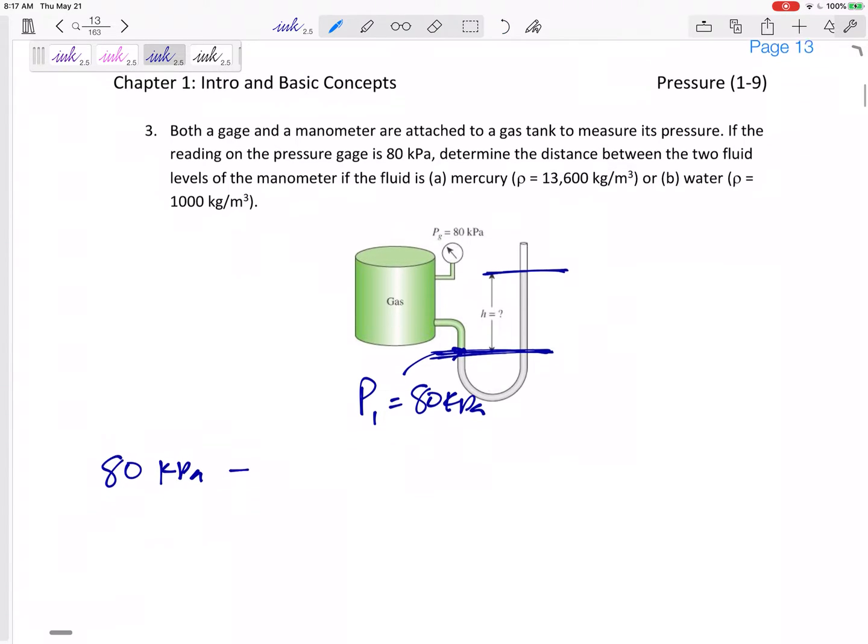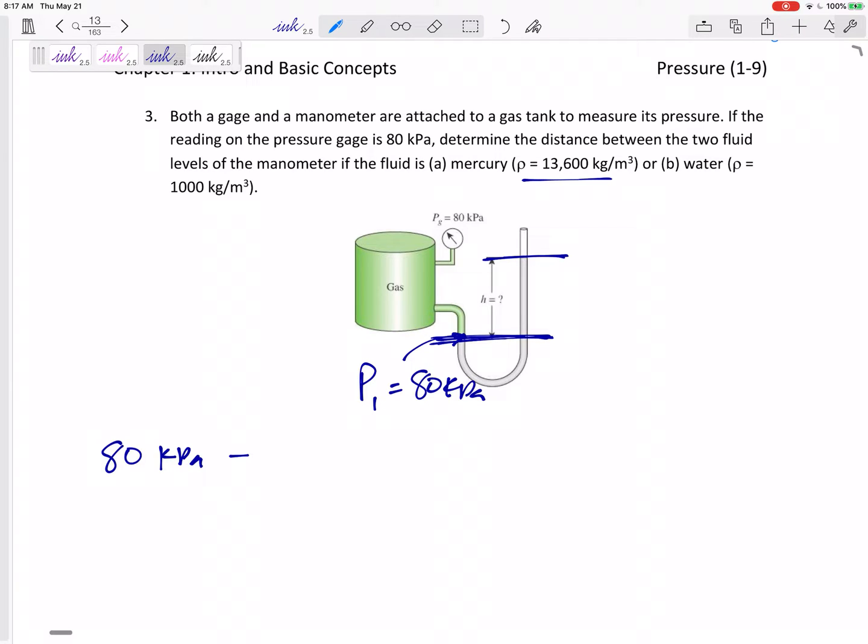What is rho g h? Let's think about if this is mercury. Rho is 13,600 kilograms per meter cubed. My g is 9.81 meters per second squared, and my height h is what I'm looking for. So I started here, I went up, so I subtract rho g h.